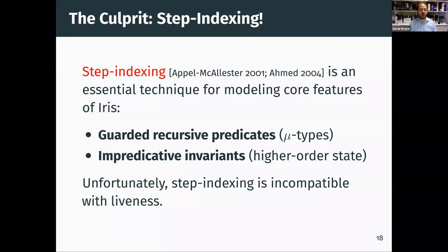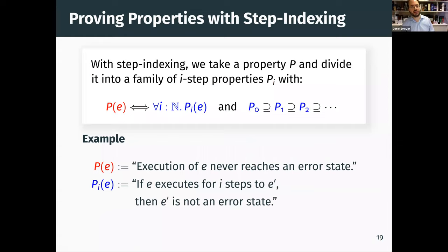Unfortunately, step indexing is not compatible with liveness. To give some intuition: with step indexing, instead of proving a property directly, you stratify it into a family of i-step properties pi, where i-step means the property can be determined by only examining the first i steps of a program term E's computation.